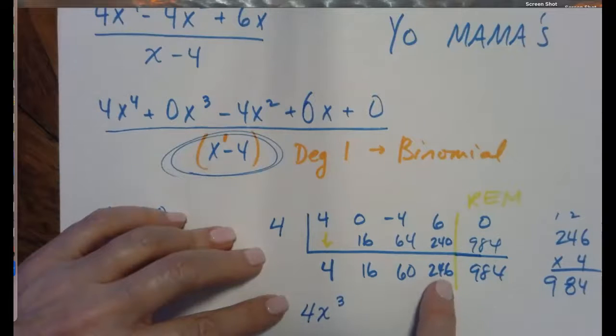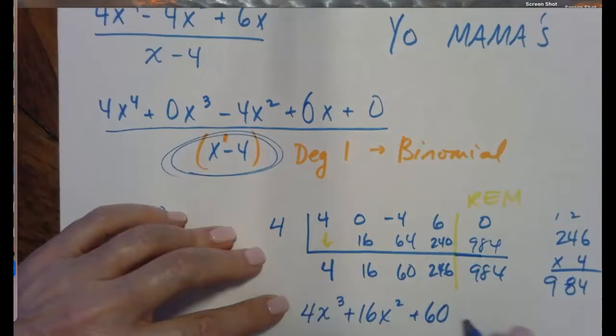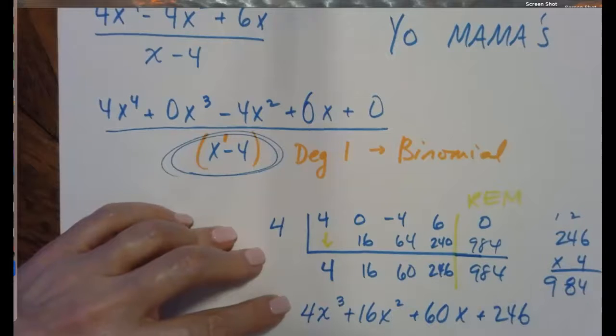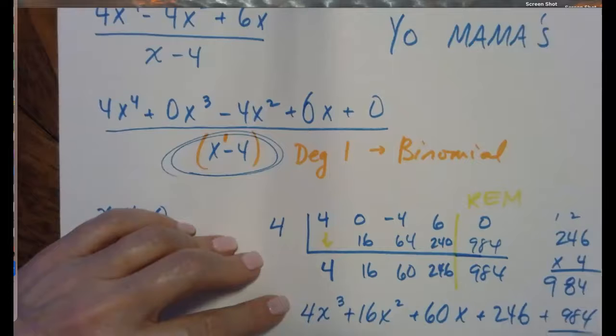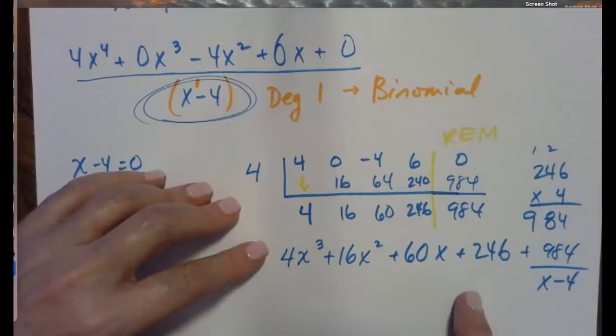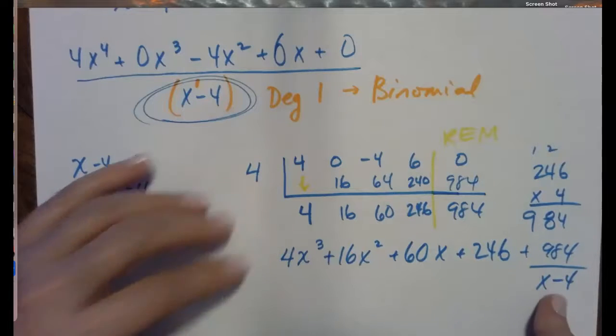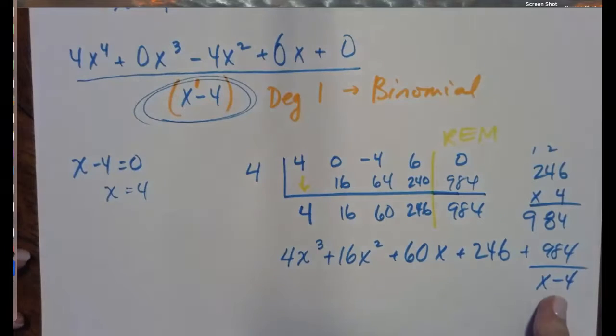0, 1, 2, 3, so 4x to the third plus 16x squared plus 60x plus 246 plus 984 over x minus 4. So here's our quotient, and here's our remainder over our divisor. And now it's not that we want to keep it all over here. Here we go.